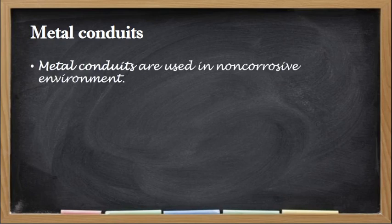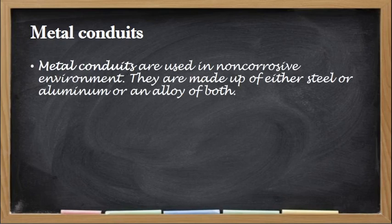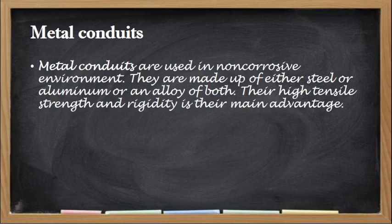Metal conduits are used in non-corrosive environments. They are made up of either steel or aluminum, or an alloy of both. Their high tensile strength and rigidity is their main advantage. Metal conduits are used in non-corrosive environments — those environments which do not produce rust — because if metal reacts to corrosive substances in the environment, it will rust.